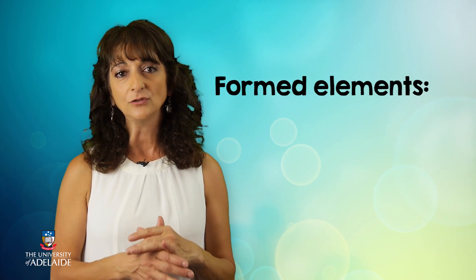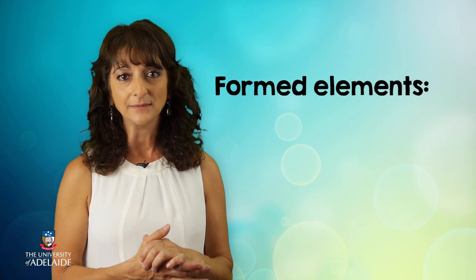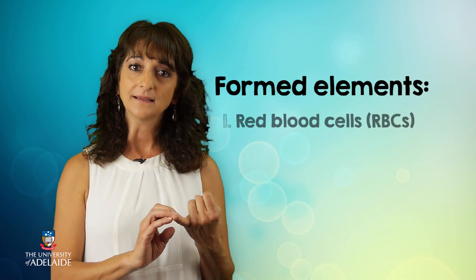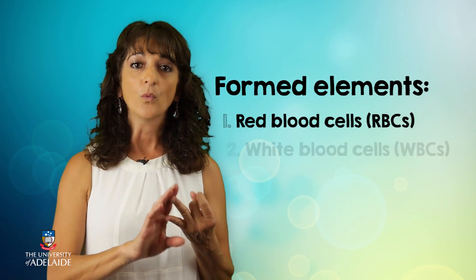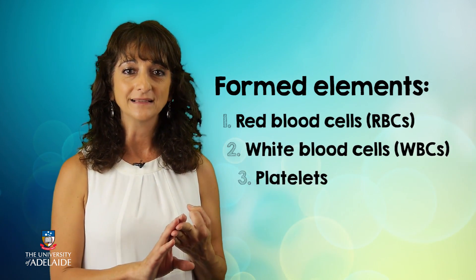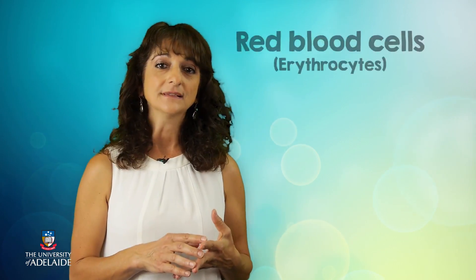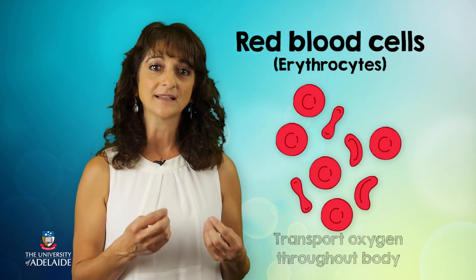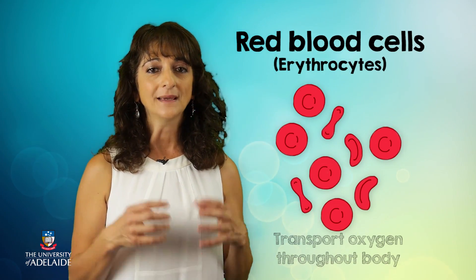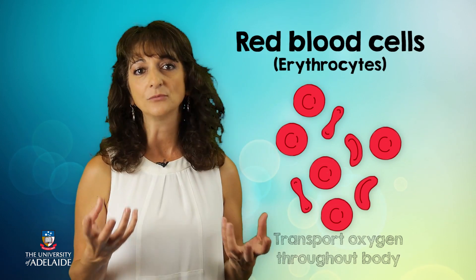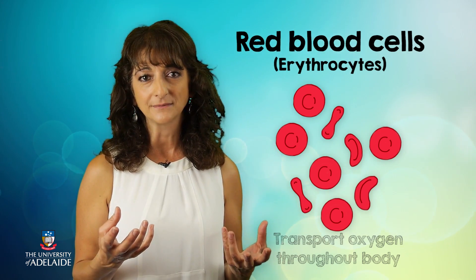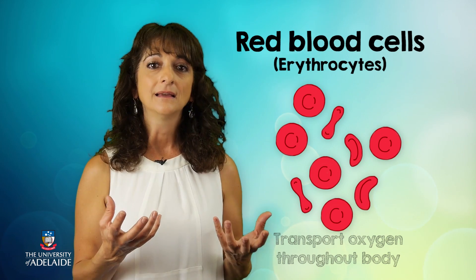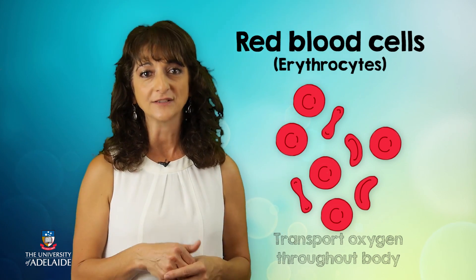We can now take a closer look at the formed elements. There are three types: red blood cells, white blood cells and platelets. Red blood cells are the formed elements responsible for the transportation of oxygen. You may sometimes hear them referred to as erythrocytes. They give blood its red colour and also account for half of its volume.